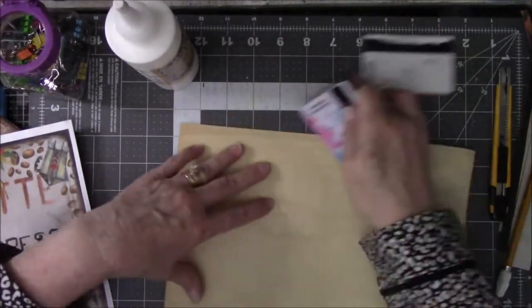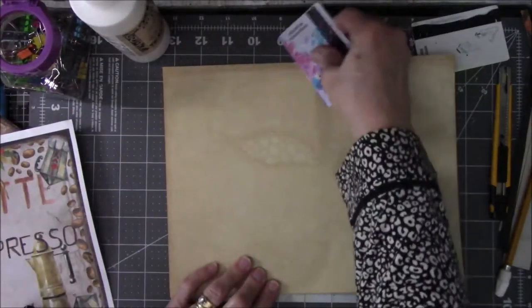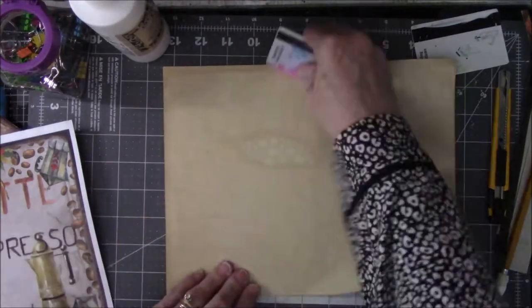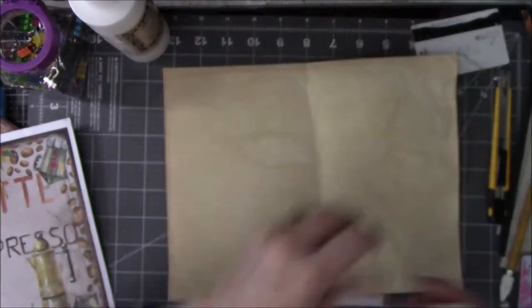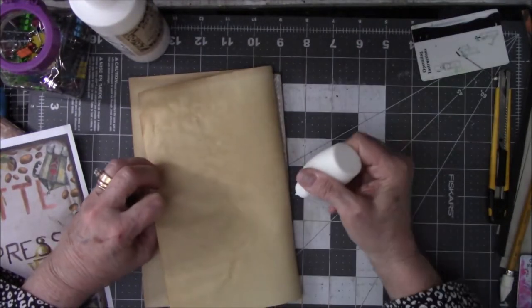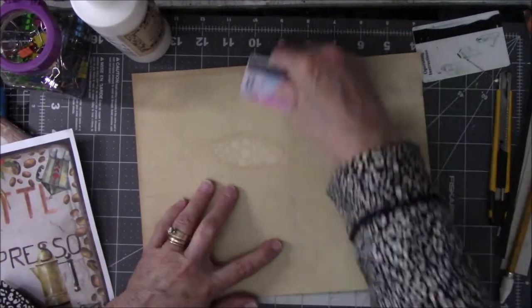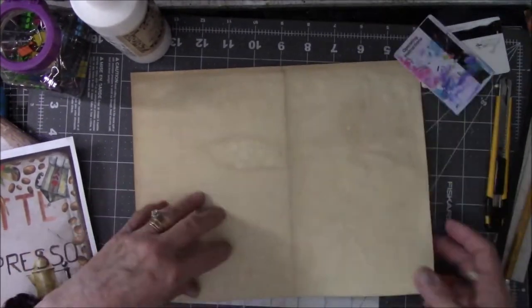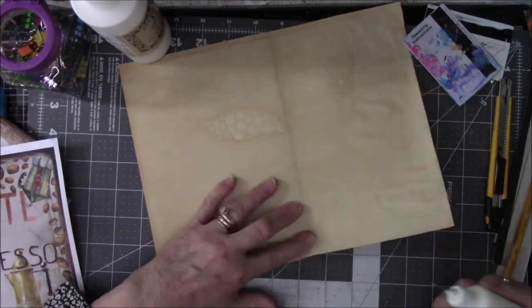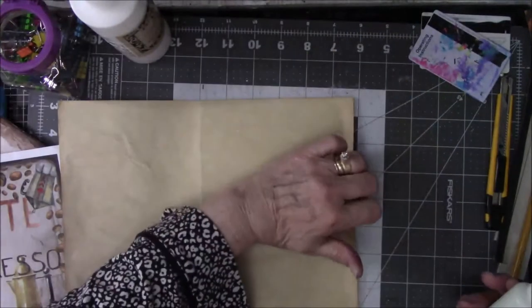What I decided to do was to glue the coffee-dyed paper onto the chipboard, and that's what I'm doing here with the PVA glue, and then I smoothed it out with a credit card. I don't like it when my paper has bubbles underneath it, although there's bubbles on top of the paper, just not underneath it.